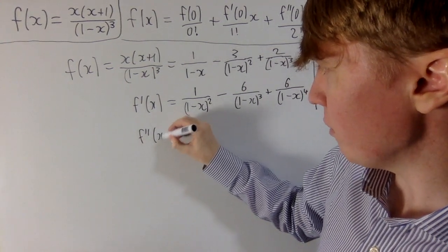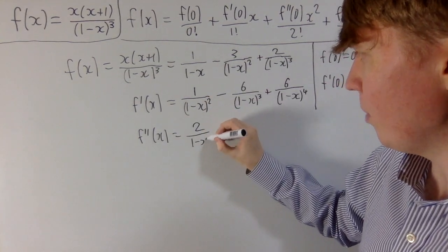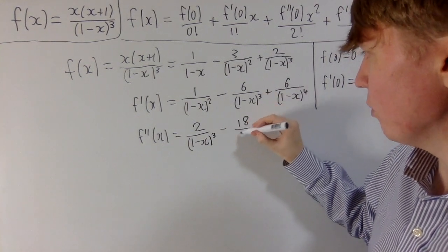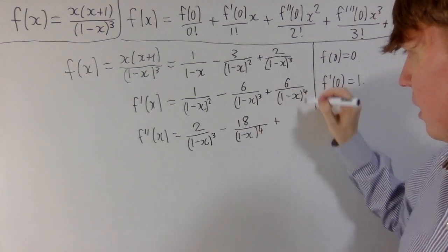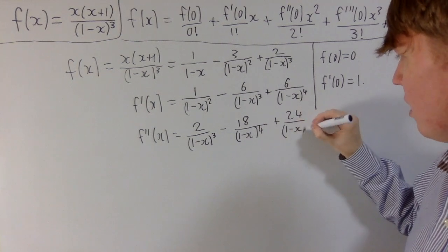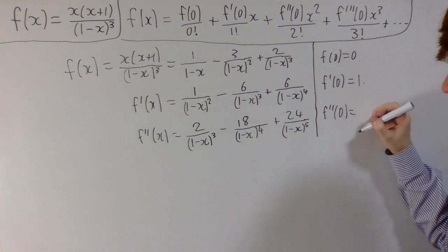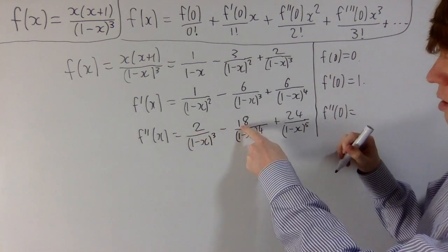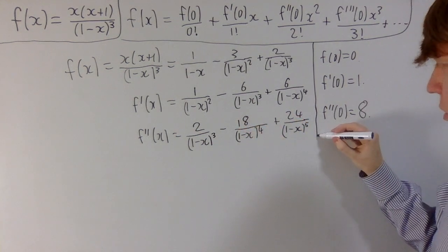Now let's calculate the second derivative. Going through this more quickly: you end up with 2/(1-x)³, then minus 3 times 6 gives 18/(1-x)⁴, and plus 6 times 4 gives 24/(1-x)⁵. So how does this help us work out the second derivative at 0? Again, all your denominators are just 1, so it's 2 minus 18 plus 24, giving you 8 as the second derivative at 0.